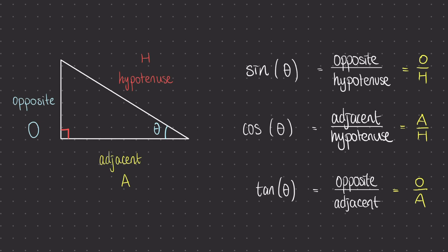So we have sine is the opposite over the hypotenuse, cos is adjacent over hypotenuse, and tan is opposite over adjacent.